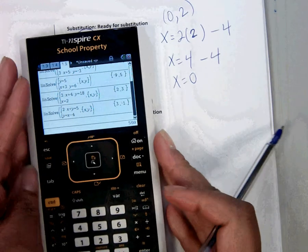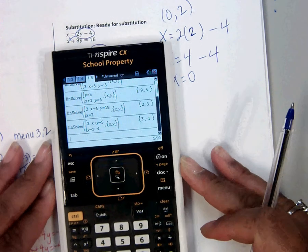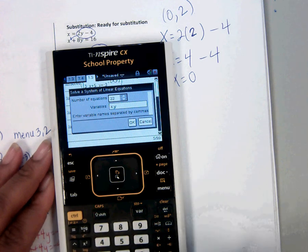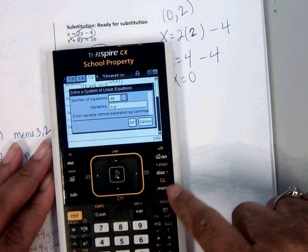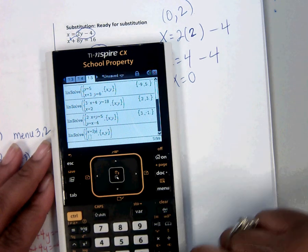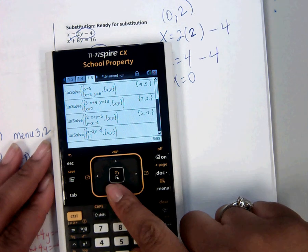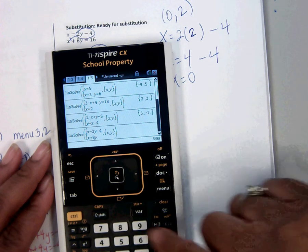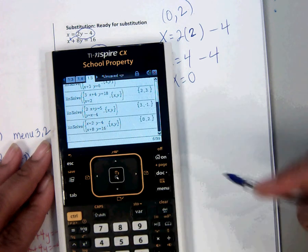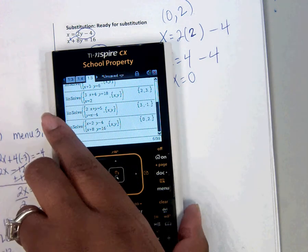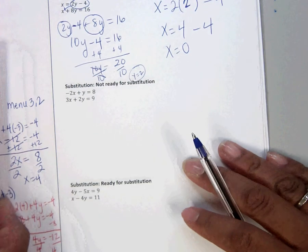Menu 3, 2. Now I get x equals 2y minus 4. Uh-oh, that should be 2. I didn't press enter. Now we do x equals 2y minus 4. x plus 8y equals 16. We're going to press enter. We get 0, 2, 0, 2. We've done this correctly. And now let's go ahead and do the next example.